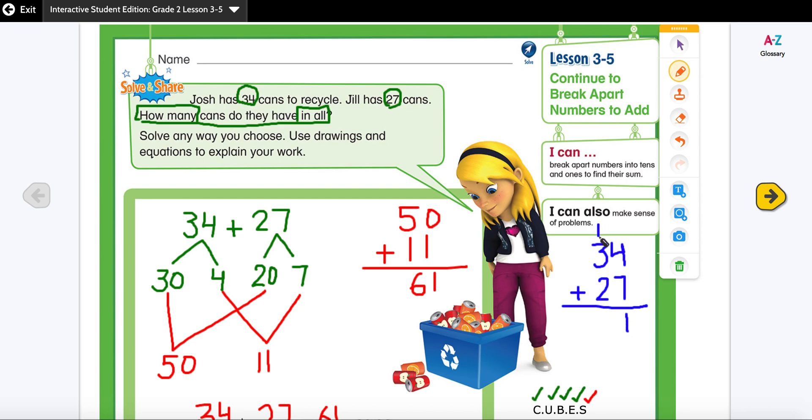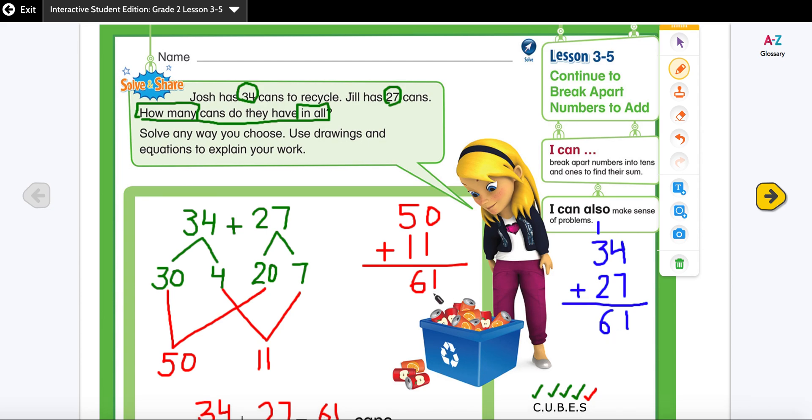My next step is to add all the tens together. 3 plus 1 is 4, 4 plus 2 is 6. You can see that this number matches with this number, so that shows that I have used my strategy correctly.